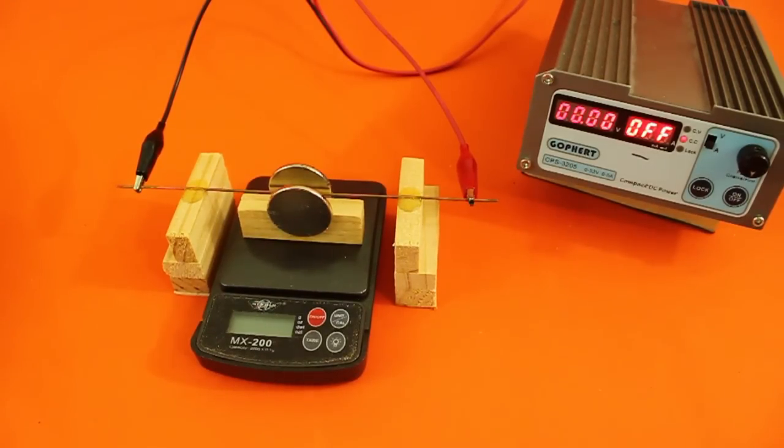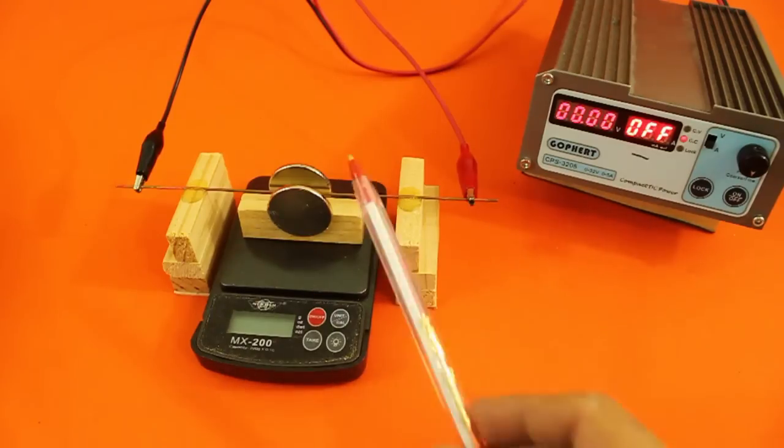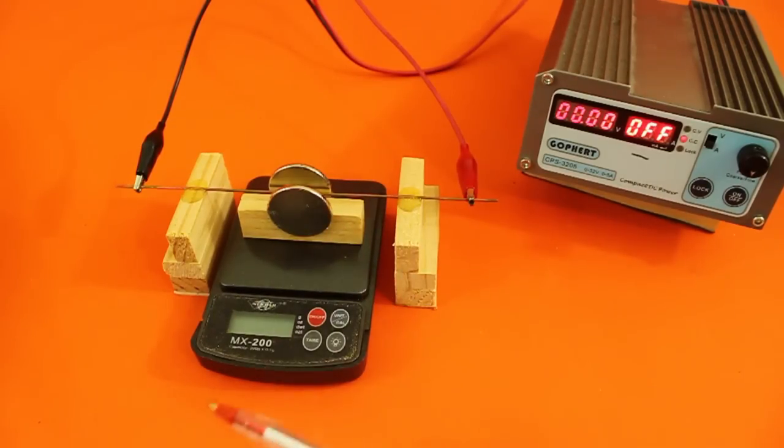But due to Newton's third law, when the conductor feels a force upwards, the magnets will feel the same force downwards and this will be registered by the scale as a gain in weight.